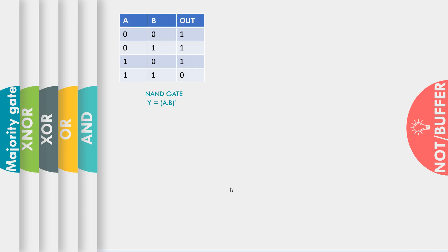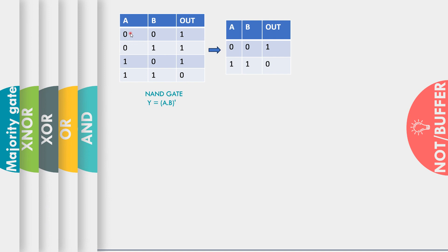Now we will start with our basic gates. First I will explain how we can design our NOT gate using NAND gate. I will explain two ways: first by analyzing our truth table and second by analyzing the boolean expression. Here is the truth table of NAND gate. If we analyze this, we can see whenever both the inputs of NAND gate are same — that is when the inputs are 0,0 — our output is inverted of that input. Similarly when the inputs are 1,1, the output is 0, which is inverted of our input 1.